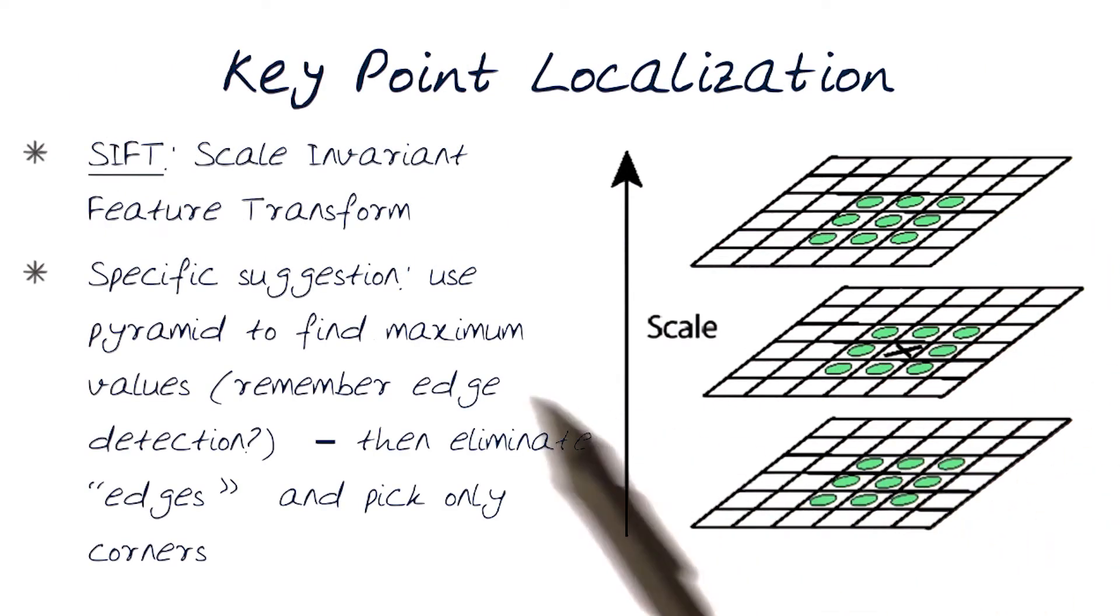One of the more important methods that's actually widely used is, as I said, SIFT, Scale Invariant Feature Transform. For this process, what is suggested is that basically use the pyramid to find the maximum values. Again, we use this kind of stuff to do things like edge detection. And in this case, then eliminate the edges and pick only the corners.